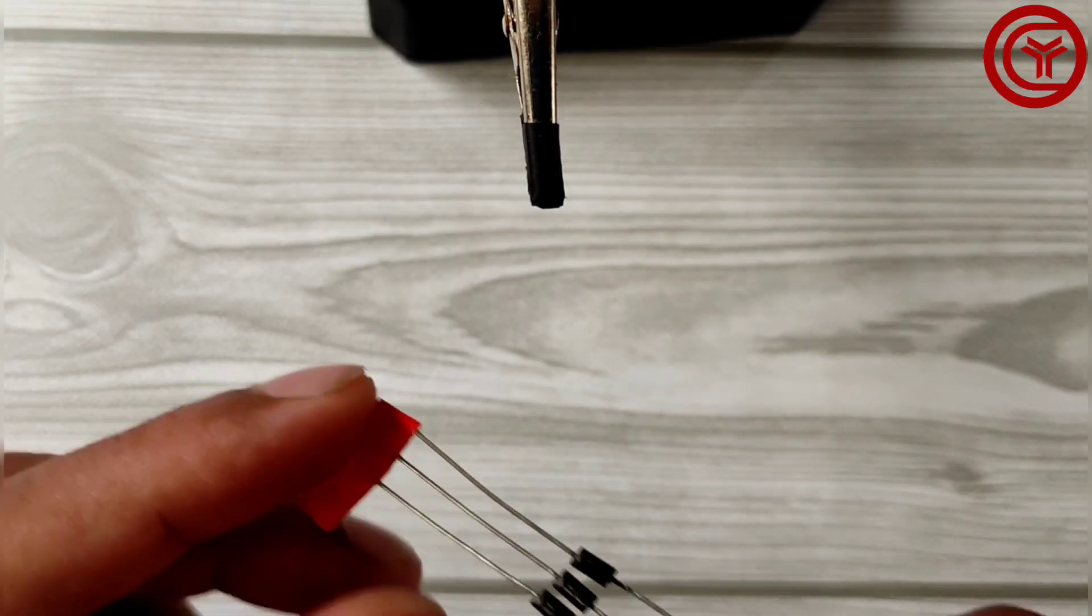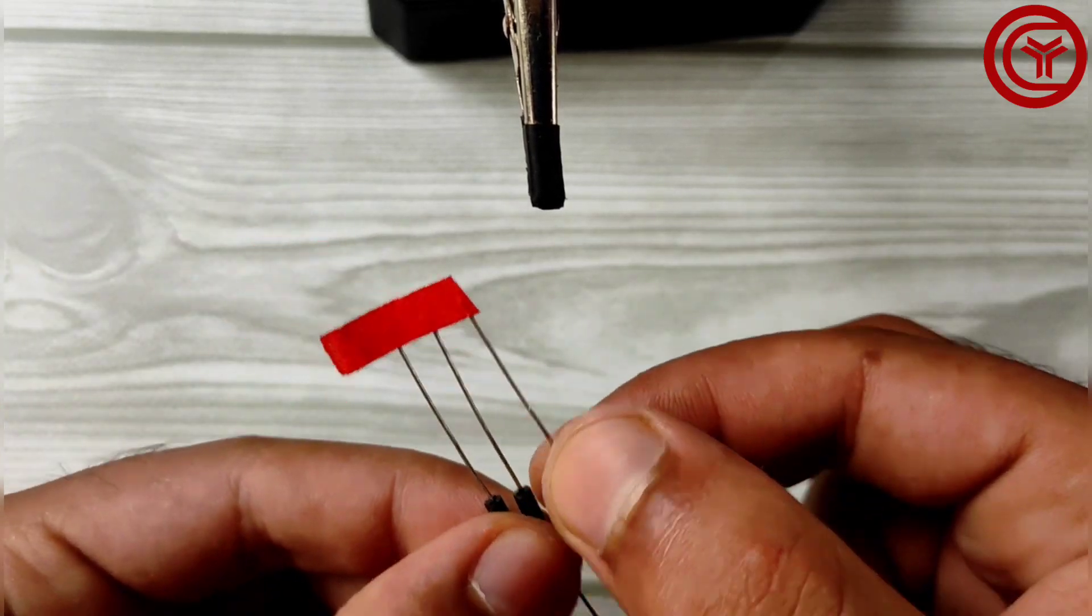Now let's start soldering components together. Take a diode and cut excess leads.